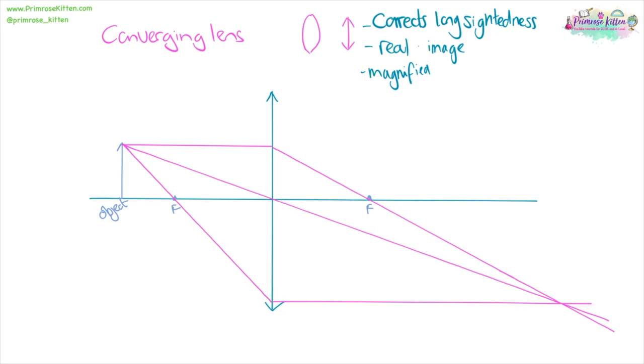Then it runs parallel with the axis and is going to be there. Then over here we are going to get our image formed. And that image is going to be upside down. So the top is there and the top is there.